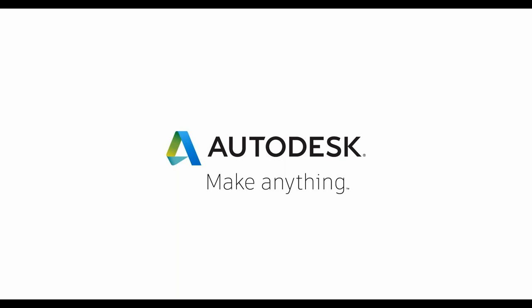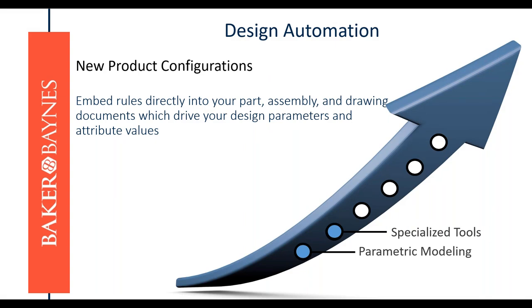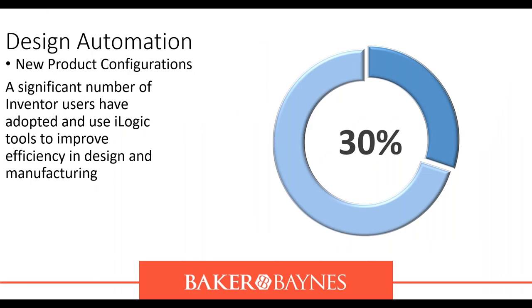Why would you want to model everything if Inventor already has it available for you to insert and modify to whatever you need in your model or design? Inventor offers the ability to capture the engineering rules of your design so that you can reuse it to make new rapid configurations. A growing number of companies and individual Inventor users are witnessing the power of implementing logic in their daily activities to improve efficiency — not just in design but also in manufacturing software that works within Inventor, with 30% reporting new product configurations.